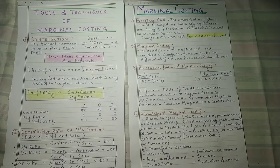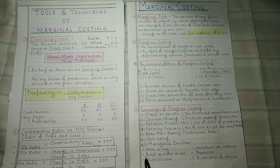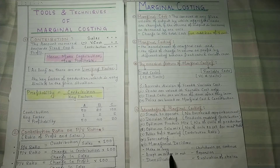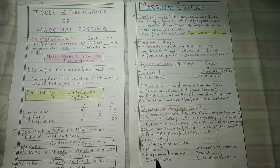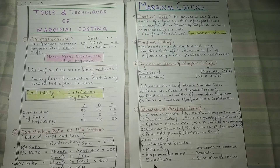Marginal costing helps us take many managerial decisions. The seventh advantage is managerial decision making. The first type of decision is make or buy — should we make this product in our company or purchase it from outside? Or if we have an order, should we accept it or not, and does accepting it increase our profitability? Diversification — do we need to diversify our product line or not? Such a lot of decisions depend on marginal costing.